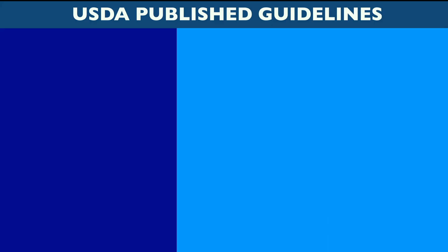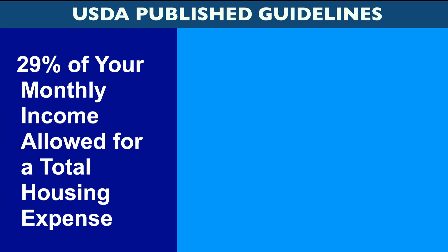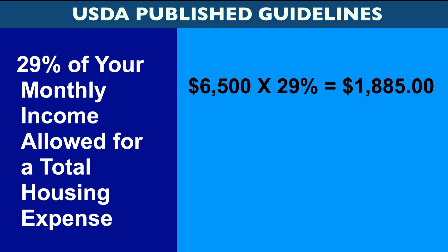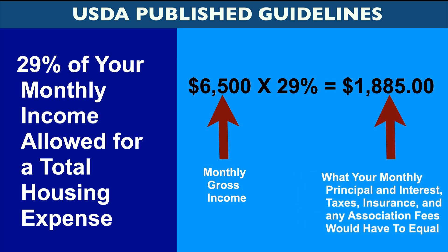Although some exceptions do exist, USDA published guidelines currently permit 29% of your monthly income to be allowed for a total housing expense. For example, if there is $6,500 in monthly gross income, 29% of that is $1,885. This would be the number that your monthly principal and interest, taxes, and any association fees would have to equal.